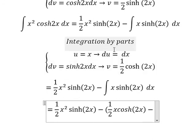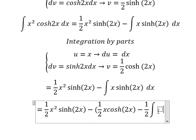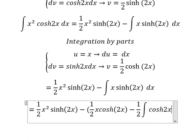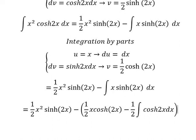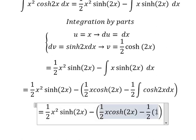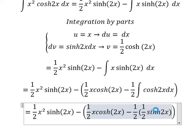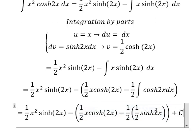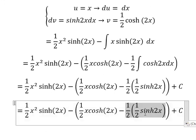So we have 1/2 x² sinh(2x) minus (1/2 x cosh(2x) minus 1/2 integral of cosh(2x)dx). And we put the constant C in here.